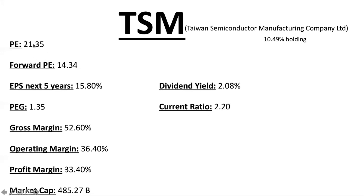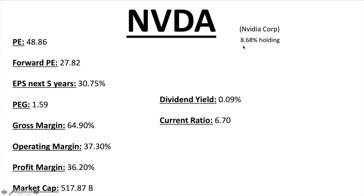TSM's PE ratio is 21.35, Forward PE 14.34, EPS for the next five years is 15.8% — pretty good. PEG ratio 1.35 — anything under two is solid. Gross margin, operating margin, and profit margins are all good; anything over 50% for gross and over 20-25% for profit margin is great. Market cap just under $500 billion, dividend yield just over 2%, current ratio 2.20 — a lot more assets than liabilities. Solid company overall — that's why it's the number one holding. The second biggest holding is NVIDIA Corporation, just under 9% of the ETF.